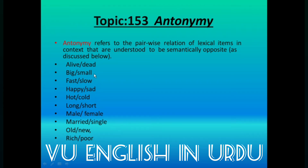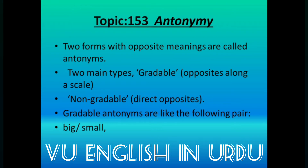یہ تمام وہ الفاظ ہیں جو ایک دوسرے سے different ہیں — pair میں جو ایک لفظ ہے وہ دوسرے سے opposite meaning رکھتا ہے. Alive مطلب زندہ، dead مطلب مردہ، big بڑا، small چھوٹا، fast تیز، slow آہستہ. Two forms with opposite meaning are called Antonyms. جو same meaning ہوں انہیں ہم Synonym کہتے ہیں.